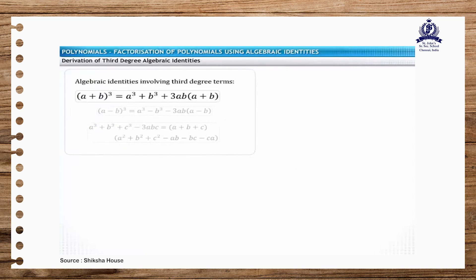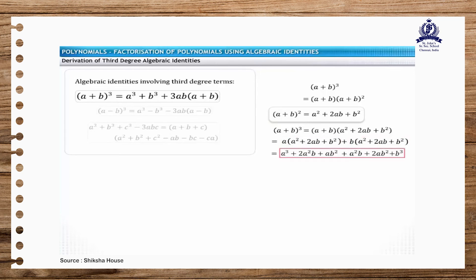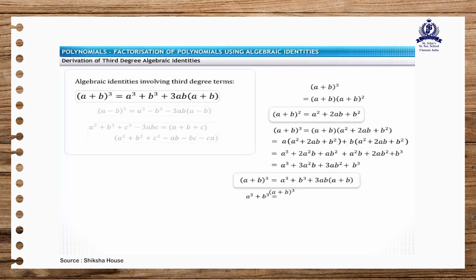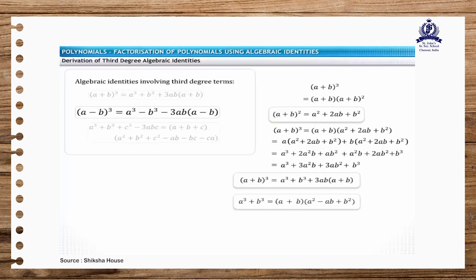Let's derive the first identity. We'll consider the left-hand side of this identity. This can be expressed as shown. Now, we'll expand the second term of the expression by using this identity. Let's simplify the obtained expression. This is the first identity. This identity can also be expressed as the sum of two cubes.